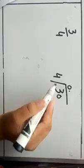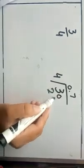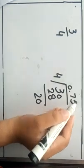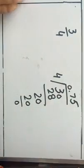Now we will find the decimal fraction of 3 over 4. We divide 3 by 4. Since 3 is less than 4, we place a decimal point. 4 sevens are 28, remainder 2; then 4 fives are 20, remainder 0. So the answer is 0.75.